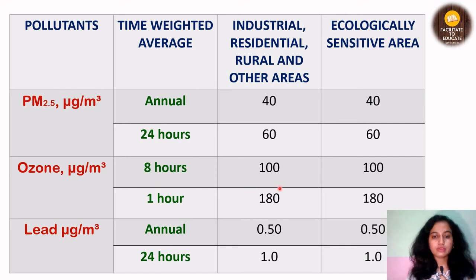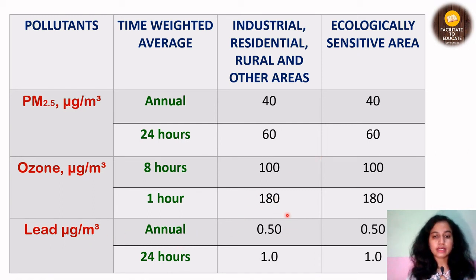For ozone, the values are a little higher, and it is measured for 8 hours and also for 1 hour — not annually. The standards are 100 for 8 hours and 180 for 1 hour. For lead, the standard is quite low as it is a very toxic gas. Annually, it is 0.5 microgram per meter cube, and for 24 hours, it is 1, for both area types.